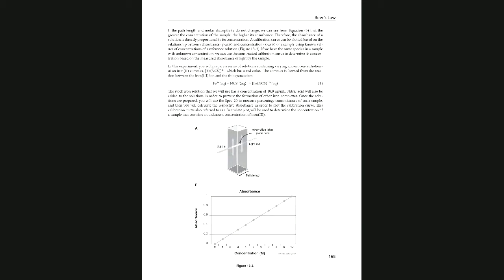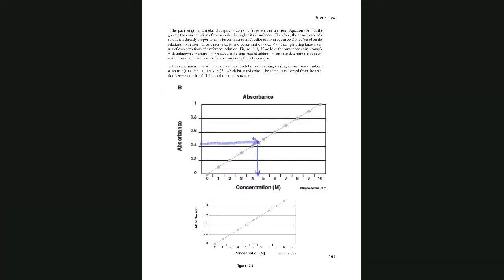Let's say we have an unknown compound that has an absorption of 0.42. We extrapolate that value — drawing a perpendicular line from the absorption to cross the best-fit line of the calibration curve — and then draw another perpendicular line down to the concentration axis (the x-axis) to find the concentration of the unknown solution.